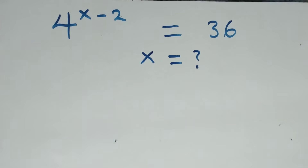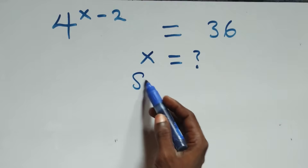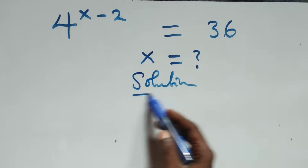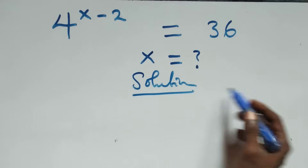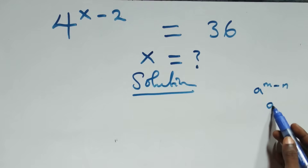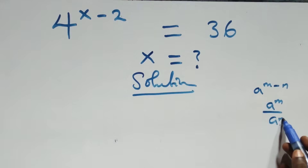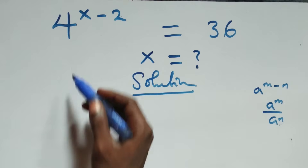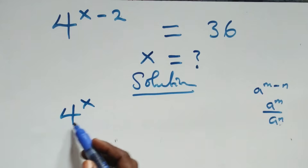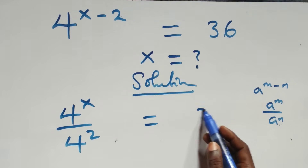Hello, you are welcome. How to solve this nice exponential equation. What we have here is the following: we have a raised to power n minus n, which is a raised to power n over a raised to power n. This here can be written as 4 raised to power x over 4 squared equals 36.